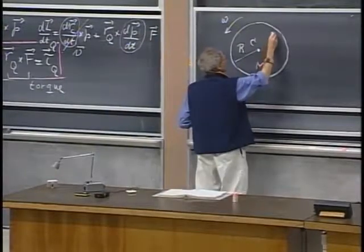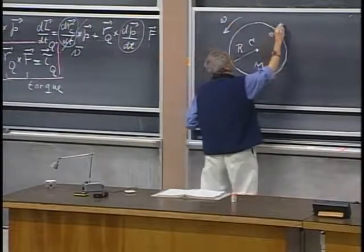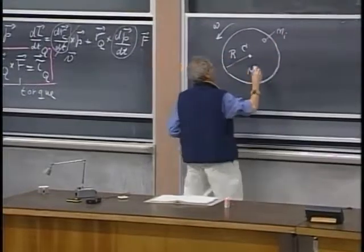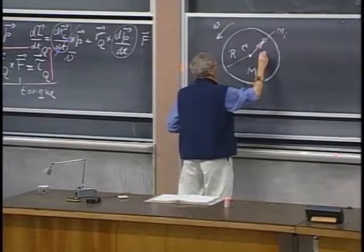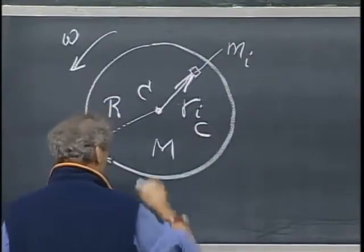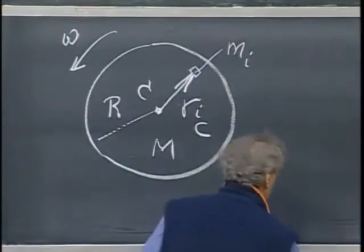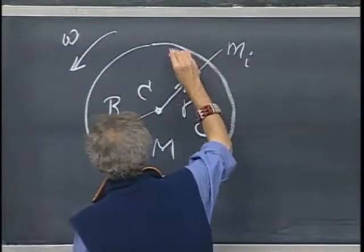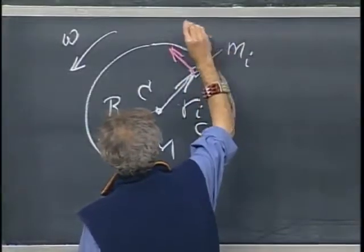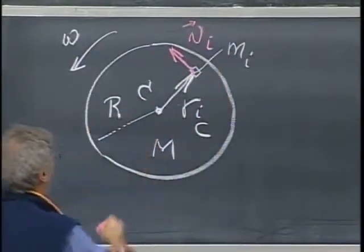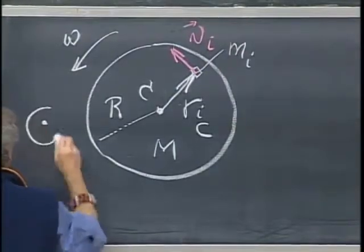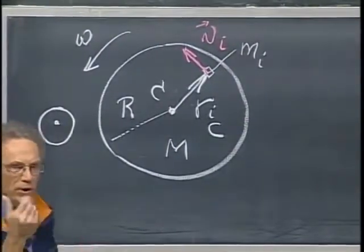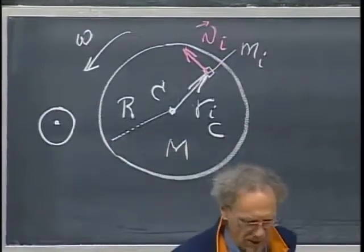If you take here a little mass element, mass m_i, this is the position vector r_i relative to that point C, and here you have the velocity v_i, then you see immediately that r cross v is coming out of the blackboard. So that's easy. Angular momentum will be in this direction. But what is the magnitude of the disk as a whole?